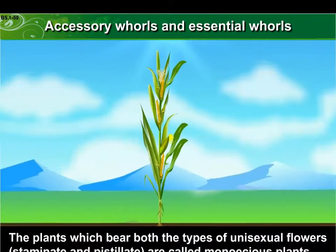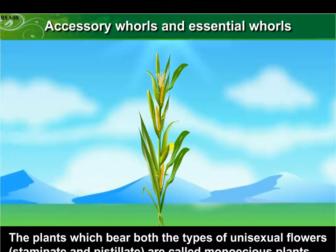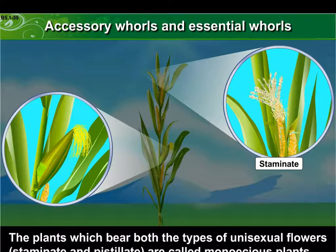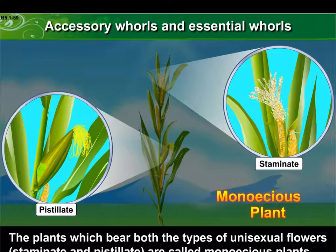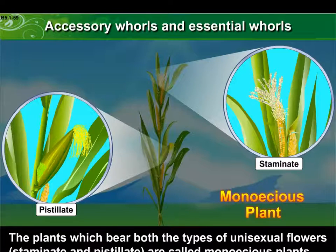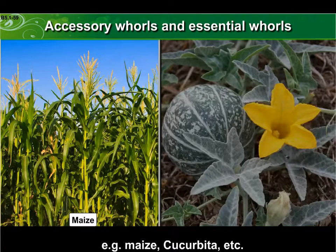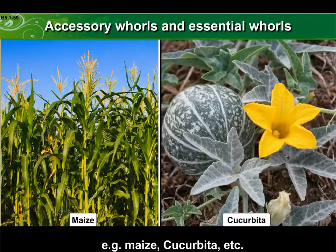Plants which bear both types of unisexual flowers — that is, both staminate and pistillate flowers on the same plant — are called monoecious plants. Examples: maize, Cucurbita, etc.